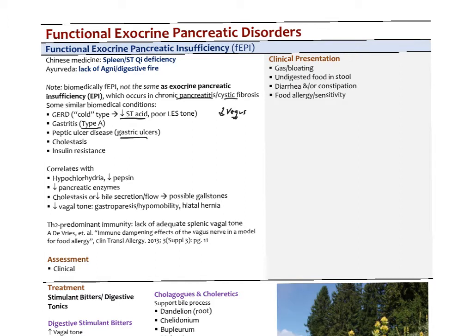Gastric ulcers are associated with hypochlorhydria; duodenal ulcers are associated with hyperacid secretion. These conditions share common interweaving factors: low vagal tone, cholestasis, and potentially insulin resistance. This correlates with hypochlorhydria, decreased pepsin, decreased pancreatic enzymes, decreased bile secretion, possible gallstones, gastroparesis, hypomobility, hiatal hernia, and potentially increased food allergies from impaired cholinergic anti-inflammatory reflexes.